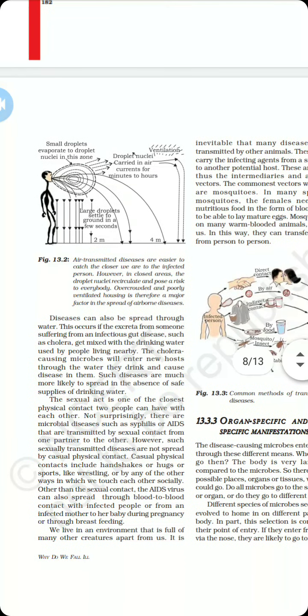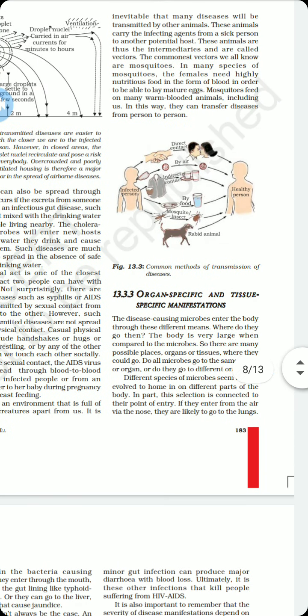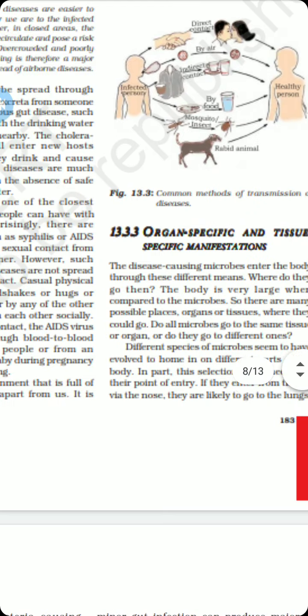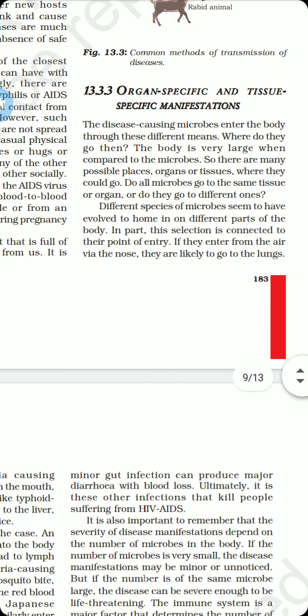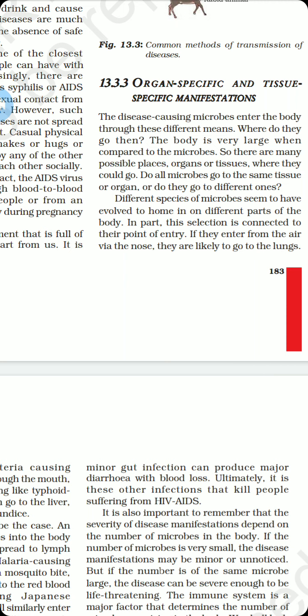Now comes the topic of organ-specific and tissue-specific manifestations. When disease-causing microbes enter the body through different means, the body is very large compared to the microbes, so there are many possible places — organs or tissues — where they could go. In this section of the chapter we are going to deal with the specific organ or tissue of the body that gets infected or affected by a particular microbe.